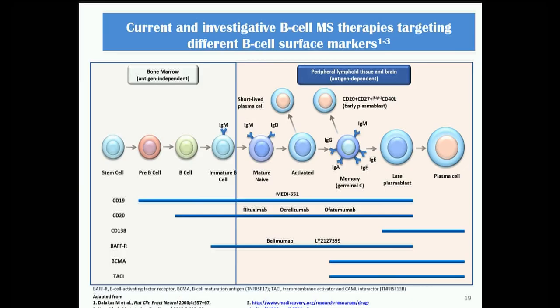The return of the B cell: capitalizing on the differential display of molecules CD19 and CD20 on B cell lineage, results with rituximab and ocrelizumab were significant. Importantly, monoclonal antibodies recognizing CD20 leave intact the stem cell, pre-B cell, and terminally differentiated plasma cell — preserving the humoral immunological memory needed for defense against microorganisms — achieving a more specific depletion of a certain range of B cell lineage cells.